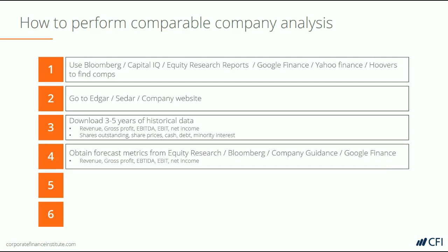Then, once you have the historical information, you're going to get forward-looking information. That means finding forecasts from Equity Research Reports, or getting it from Bloomberg or Capital IQ, and the company's forward-looking guidance as well, if they provide it.